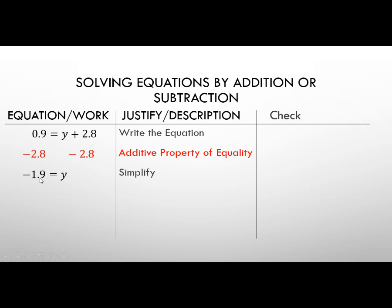All right, now we're going to go over to our check. We rewrite the equation exactly like it was before. We change our Y to the answer that we just got, so negative 1.9, and now negative 1.9 plus 2.8 equals 0.9. 0.9 equals 0.9. That's true. We definitely found the right answer.